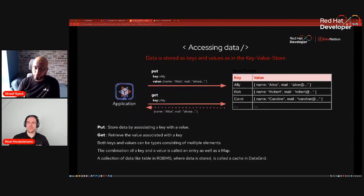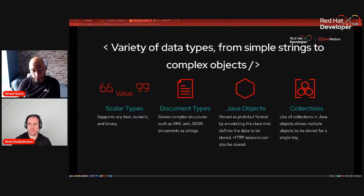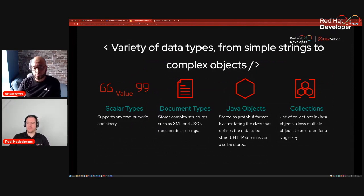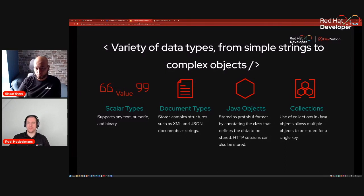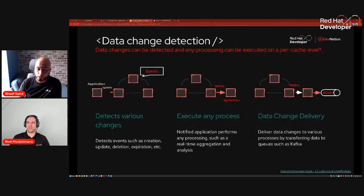Applications you'd typically use this for include IoT applications and mobile applications — anywhere you see the need to store data temporarily or even long-term where you gain performance by doing so, both read and write performance. It's a key-value store; the simple functions are put and get. When it comes to data types, it has scalar types — you can use text, numeric, binary, or upload files. Documents such as XML and JSON can be stored as well. The default serialization format is Protobuf. There are also use cases like session data — in our cart example, we're using a session emulation storing the cart into DataGrid. Java collections can be used as keys as well.